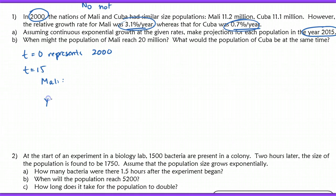Mali's model will be the starting amount, which was 11.2. I'm going to use P for population. So the population is equal to 11.2, so P naught, the population at time is zero.